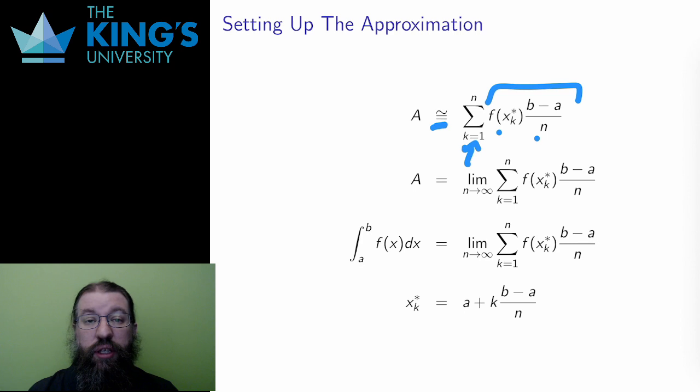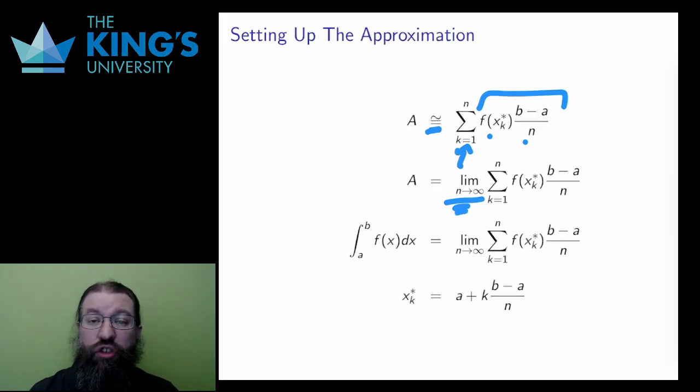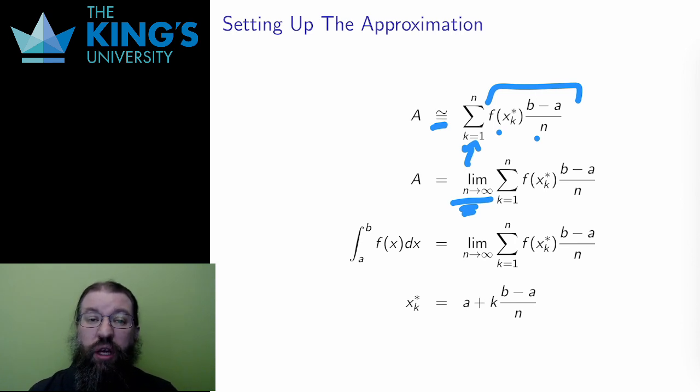This is calculus, so I want a limit of the approximation process. I take the limit as the number of rectangles goes to infinity. This should, for well-behaved functions, produce exactly the area, no longer an approximation but an exact value.